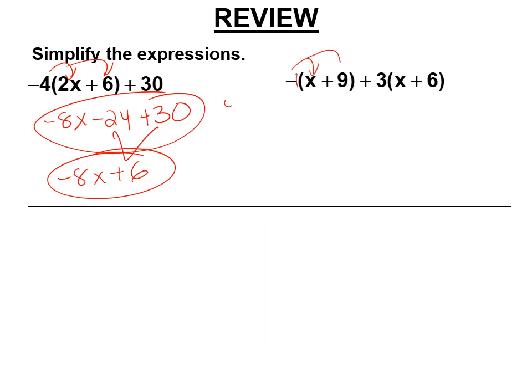So here you're distributing a negative 1. I like to write it in negative 1x. And you can even write the negative 1x in there because it's not the answer yet. Negative 1 times 9, negative 9. Here you're distributing a positive 3 plus 3x plus 18. Negative 1x plus 3x, 2x. Negative 9 plus 18 plus 9, right? Negative 9 plus 18 is 9.